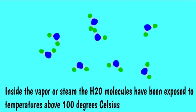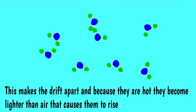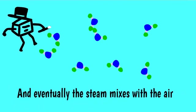Inside the vapor or steam, the H2O molecules have been exposed to temperatures above 100 degrees Celsius. This makes them drift apart. And because they are hot, they become lighter than air. That causes them to rise. And eventually, the steam mixes with the air.